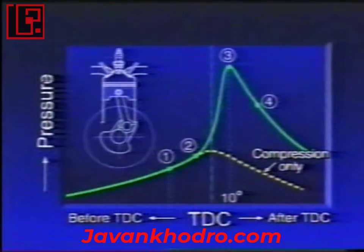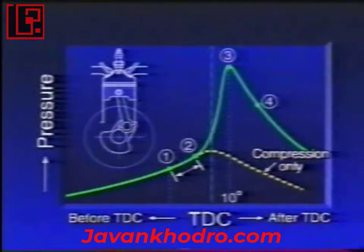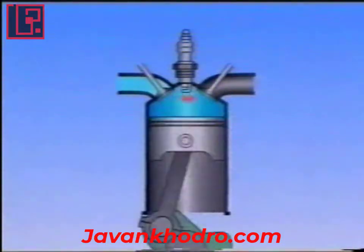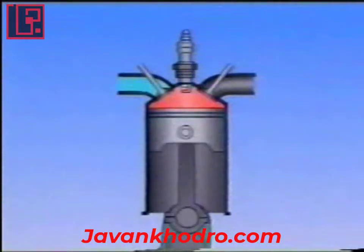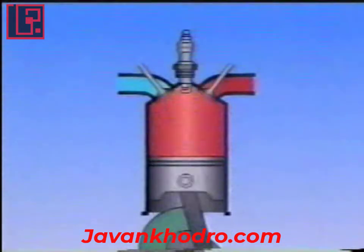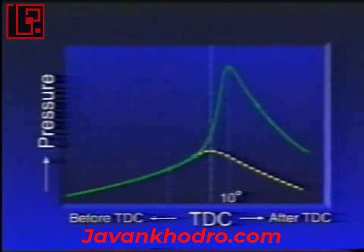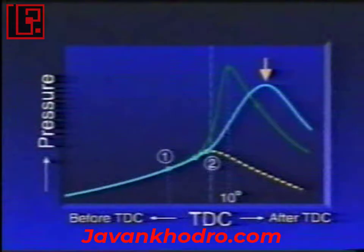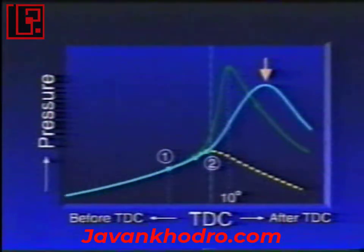The period between one and two is called the ignition delay time. For a given fuel, this delay is more or less fixed, irrespective of the engine speed. So let's think about what happens if the engine speed increases. Because the ignition delay time between one and two is constant, the angle through which the crank rotates in the same period of time increases. The point at which maximum pressure is reached lags behind 10 degrees. So in this case, it is necessary to advance the ignition timing.